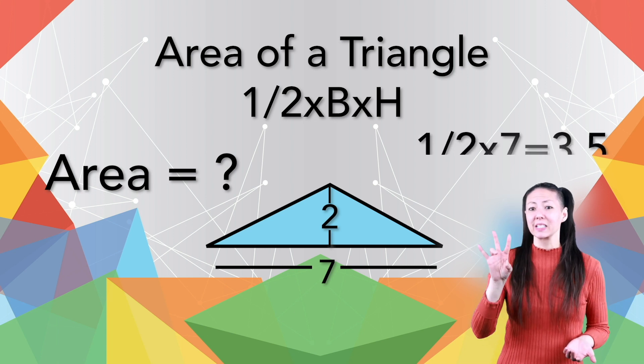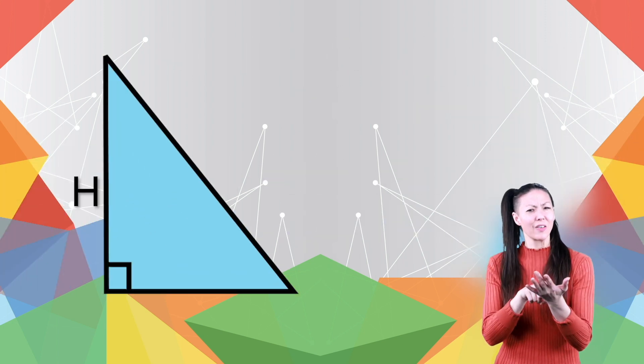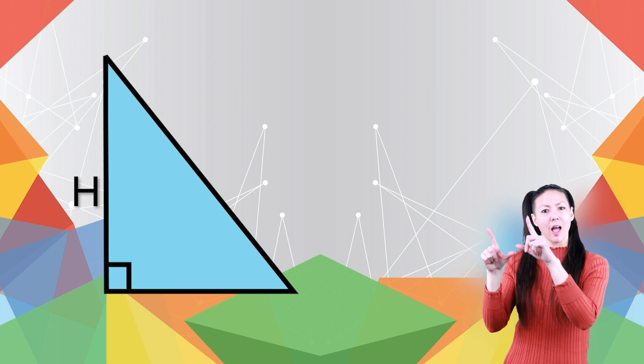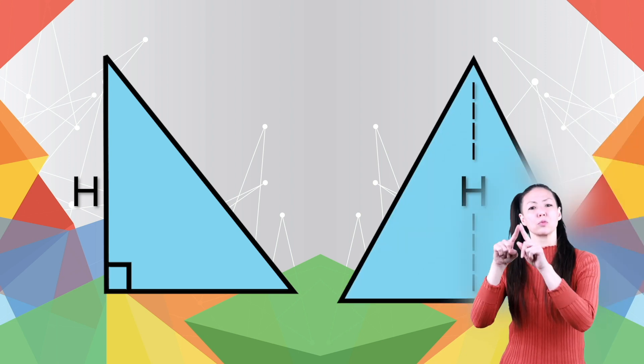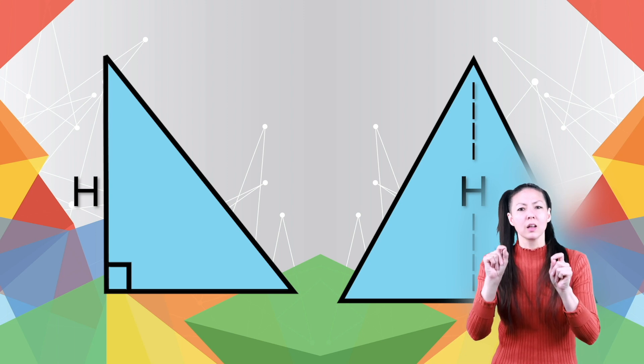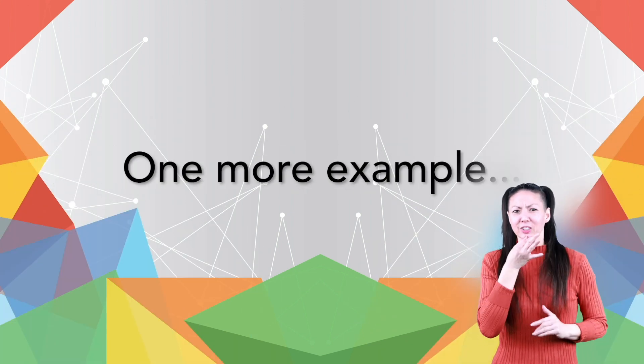Take half of seven and multiply it by two, and you get seven. Notice how when you have a right triangle, the height is the leg of the angle. For the other triangles, the height is shown using a dashed or dotted line that goes from the bottom to the top.